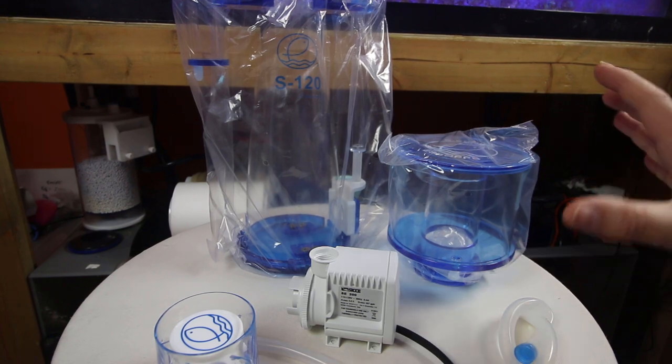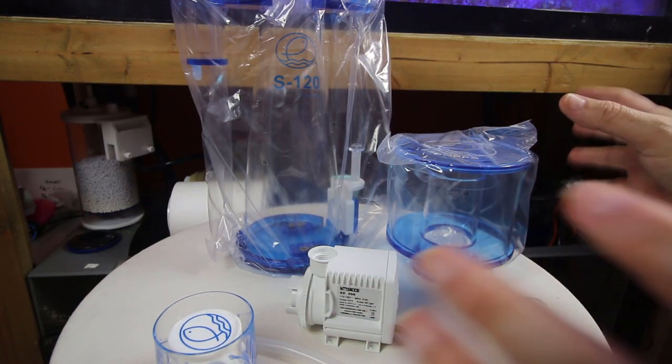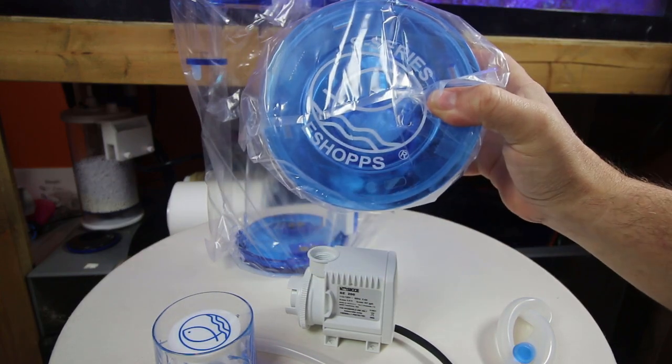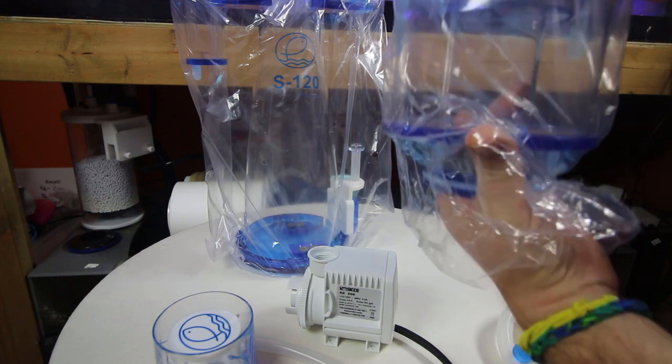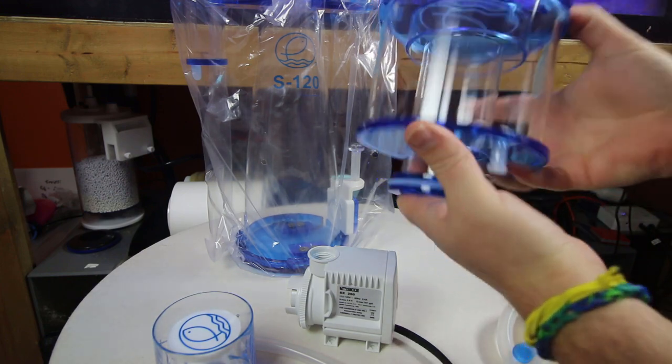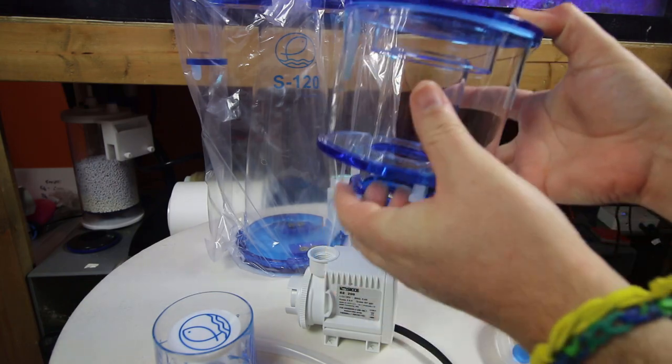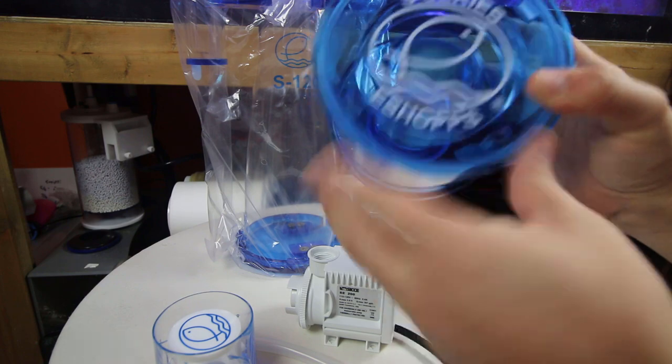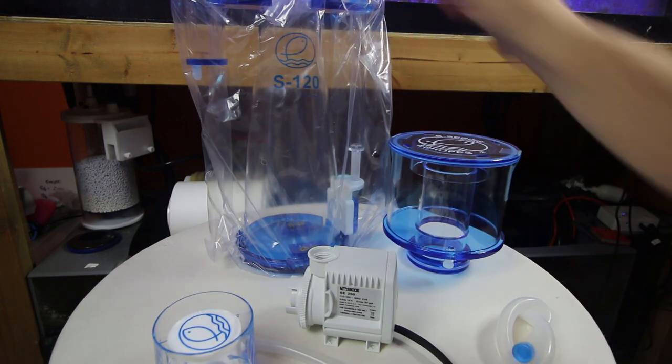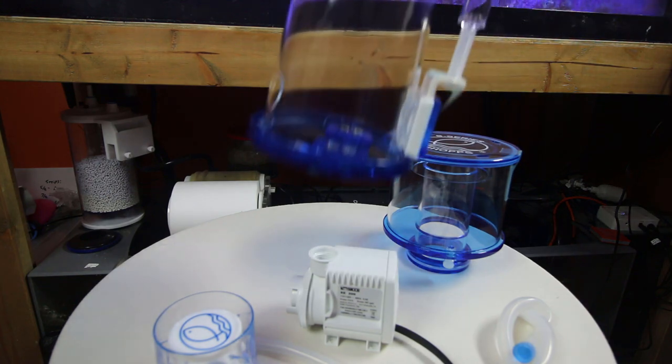So some really nice benefits to this particular skimmer that I am really excited for is, one, a very large collection cup. For how small this skimmer is, as you can see, we actually have a really decent sized cup on it. It does have a drain port, which is always nice in case you do want to use a waste collector of some sort. Beautiful construction. Nice, clear, transparent blue. I love that.